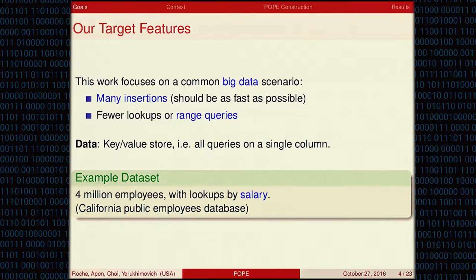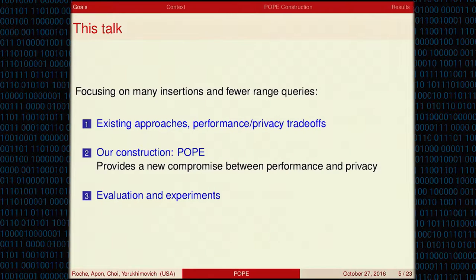As a concrete dataset, think about a salary database with names and salaries, where you want to answer questions like: what are the names of all people who make between $100,000 and $110,000? We actually have a great salary database from the state of California. I'm going to talk about what's out there right now — it's foolhardy standing in front of most of the people who did this other work — but it'll give us a general idea of the solution space. Then I'll talk about POPE, which provides a new compromise: not the fastest, not the most secure, but a bit faster and a bit more secure than some existing solutions.